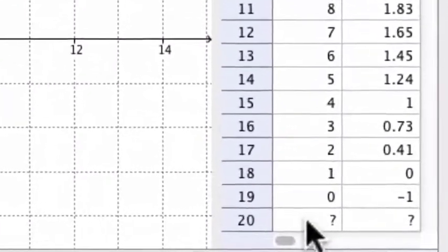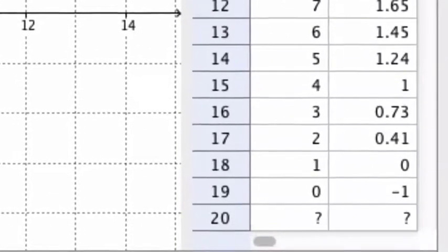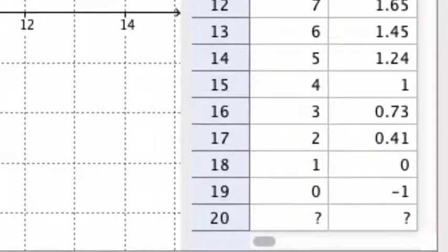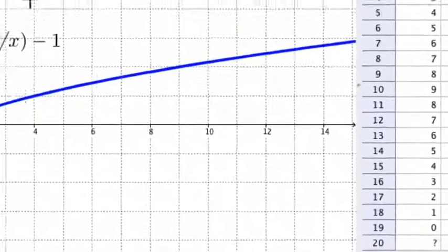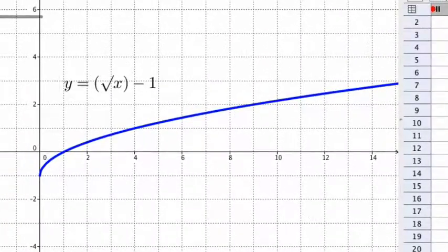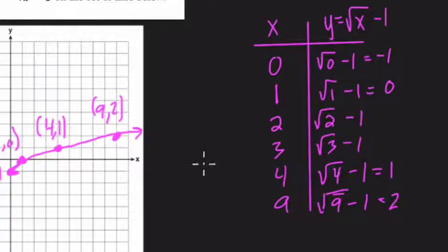Why does the point disappear once x goes below zero? In other words, once the domain, we call our values for x the domain, goes below zero?